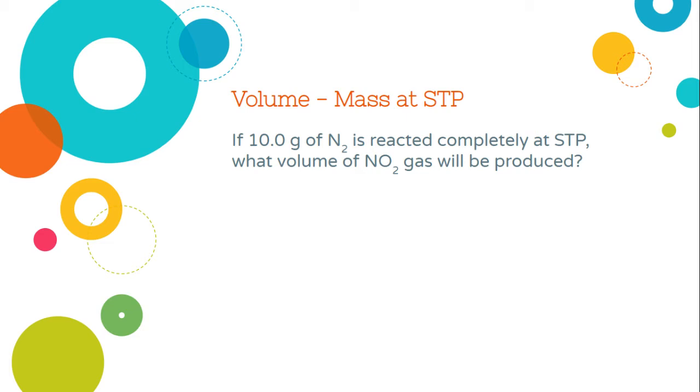Well, anytime we're doing stoichiometry, we need to have a balanced chemical equation. So I've provided one for you here in pink. Since we're at STP, we're just going to go ahead and jump into our dimensional analysis. So we're going to write our given information first.